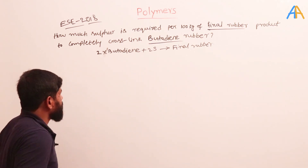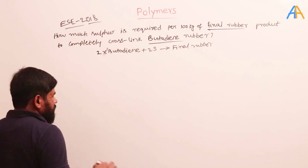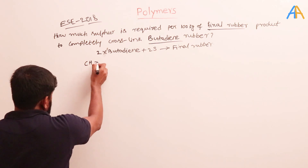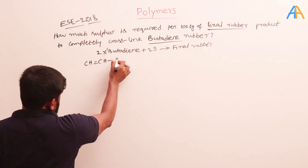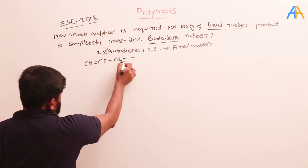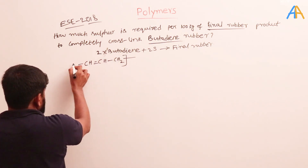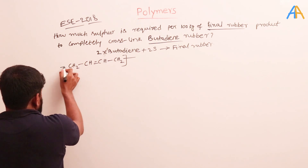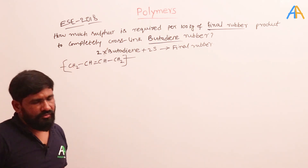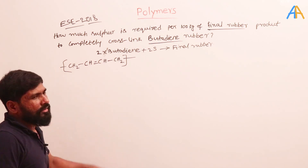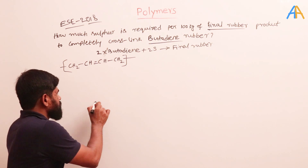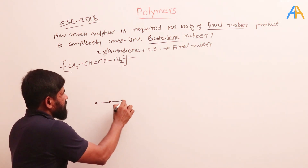So what is the butadiene formula? Butadiene is CH2=CH–CH=CH2. Now here in polybutadiene, in the vulcanization, we do not keep CH3 at the end — because it is a polymer chain continuing, so we write it without the terminal CH3.